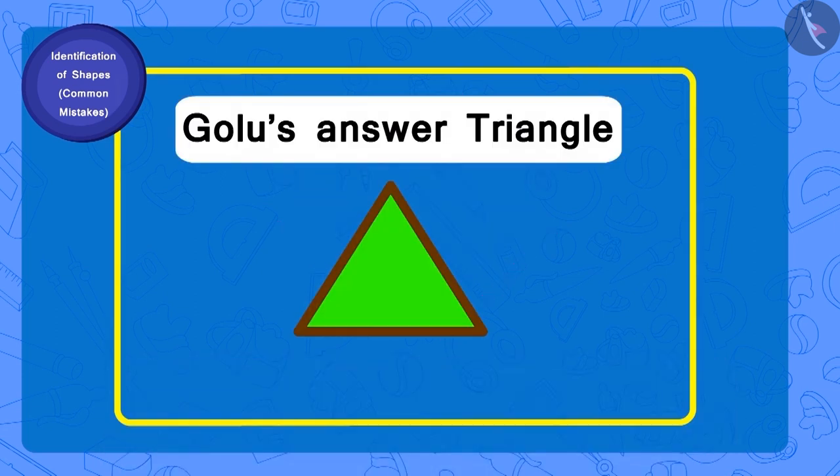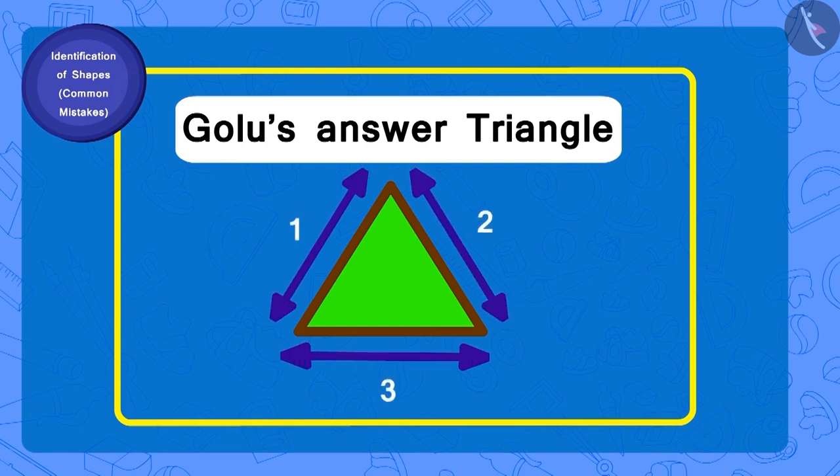Golu has written triangle as the answer. How many sides does a triangle have? Three. And how many corners? Three.